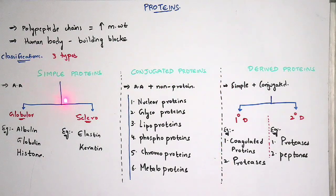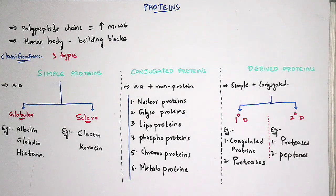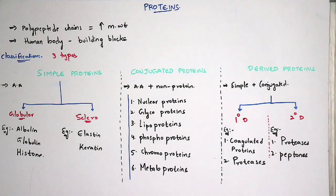Simple proteins are subclassified into two types: globular proteins and scleroproteins. Examples are important — you must mention them in examinations. For globular proteins the best examples are albumin, globulin, and histone. For scleroproteins the examples are elastin and keratin. Keratin is found in hair and nails. Elastin is a protein mainly found in elastic fibers, such as elastic cartilage.